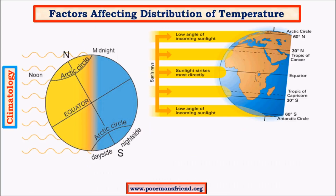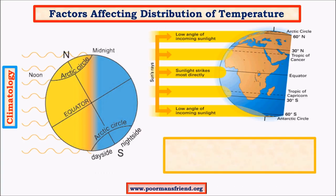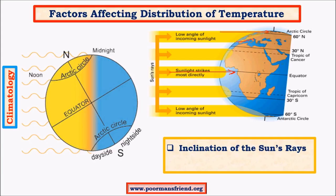Moving to factors affecting the distribution of temperature — the first important factor is inclination of sun's rays. Earth is spherical in shape — more specifically, geoid — and due to this shape, the intensity of sunlight received at various latitudes is different. At the equator, sun's rays are direct, so intensity is very high. At the poles, due to the slantness of rays spread over a large area, intensity is comparatively much lower. As a result, temperature keeps dropping as we move from equator towards the poles.